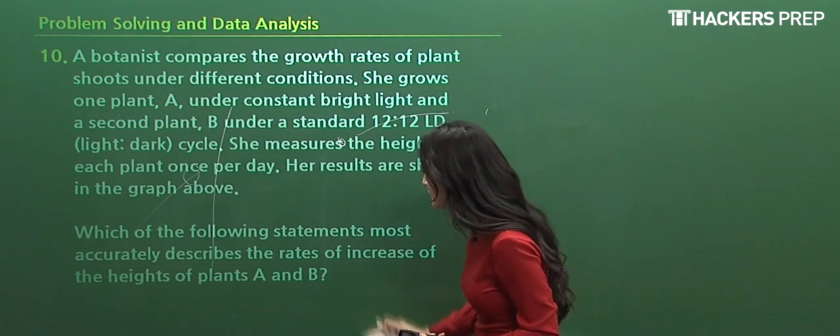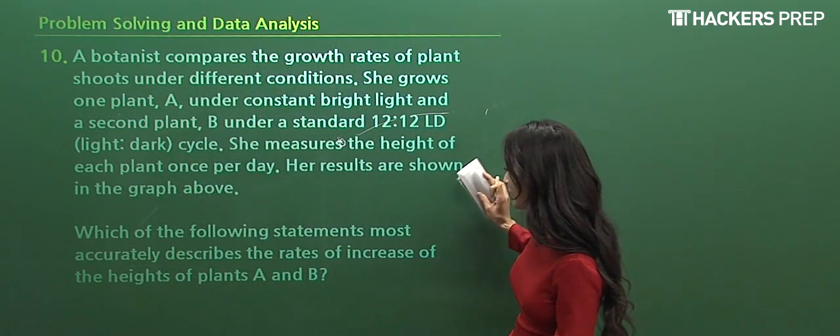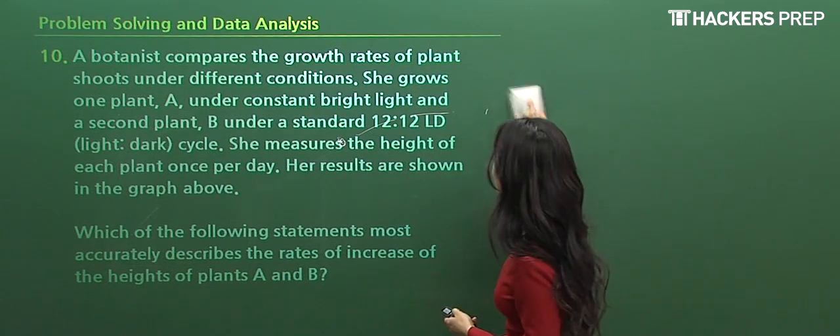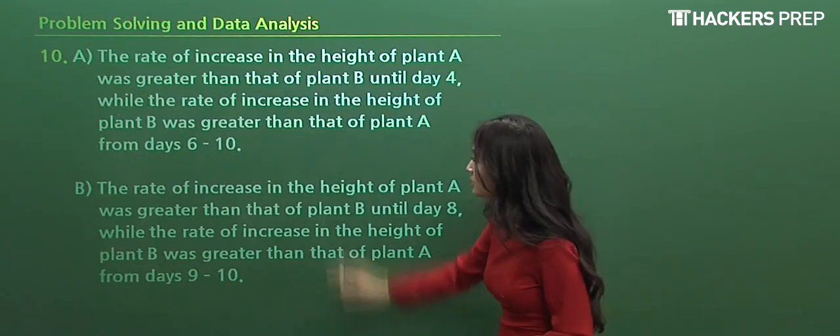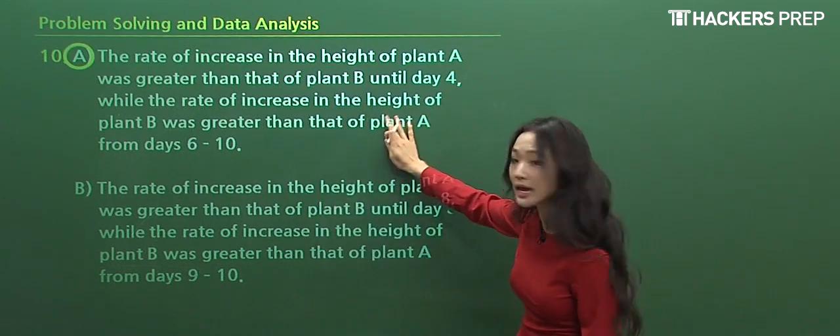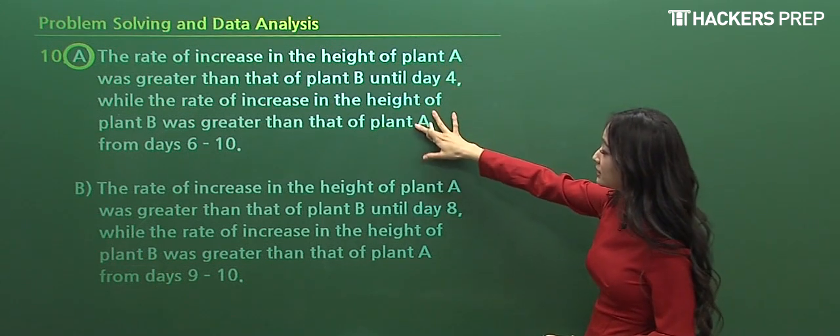Which of the following most accurately describes the rates of increase? This means by definition the slope of plants A and B respectively. So we have four answer choices, but if you read through them, A matches exactly as to what we anticipated. The rate of increase of A was greater than B until day four. Yeah, we pointed that out.